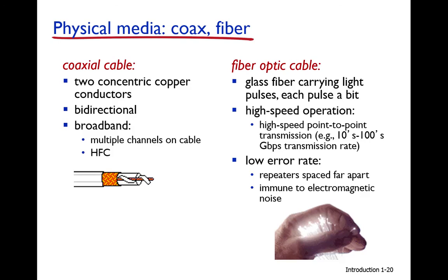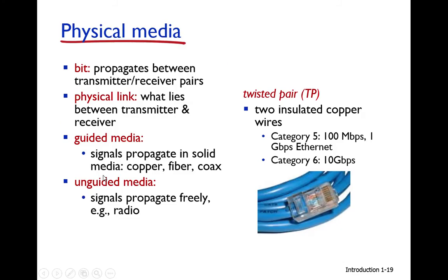Coaxial cable consists of two co-centric copper wires. It is bi-directional — data can flow both ways, making it full duplex. It is broadband and multiple channels can be used on the cable, as seen in the hybrid fiber-coaxial cable used in cable access networks. It is a shared medium, meaning more than one user can share it, unlike twisted pair cable which connects only two nodes.